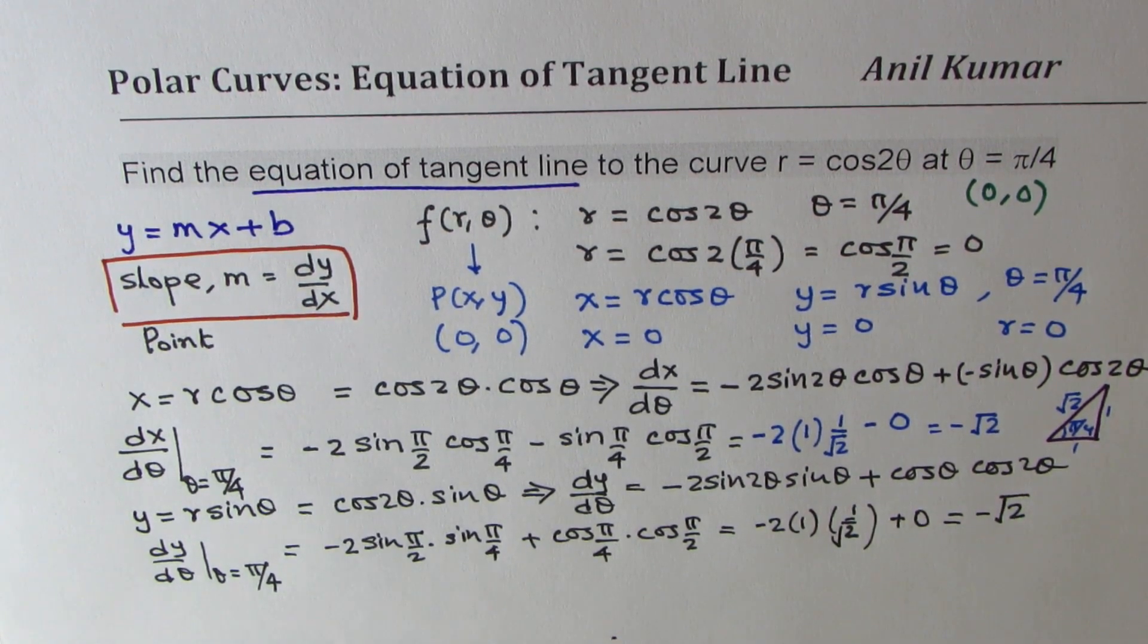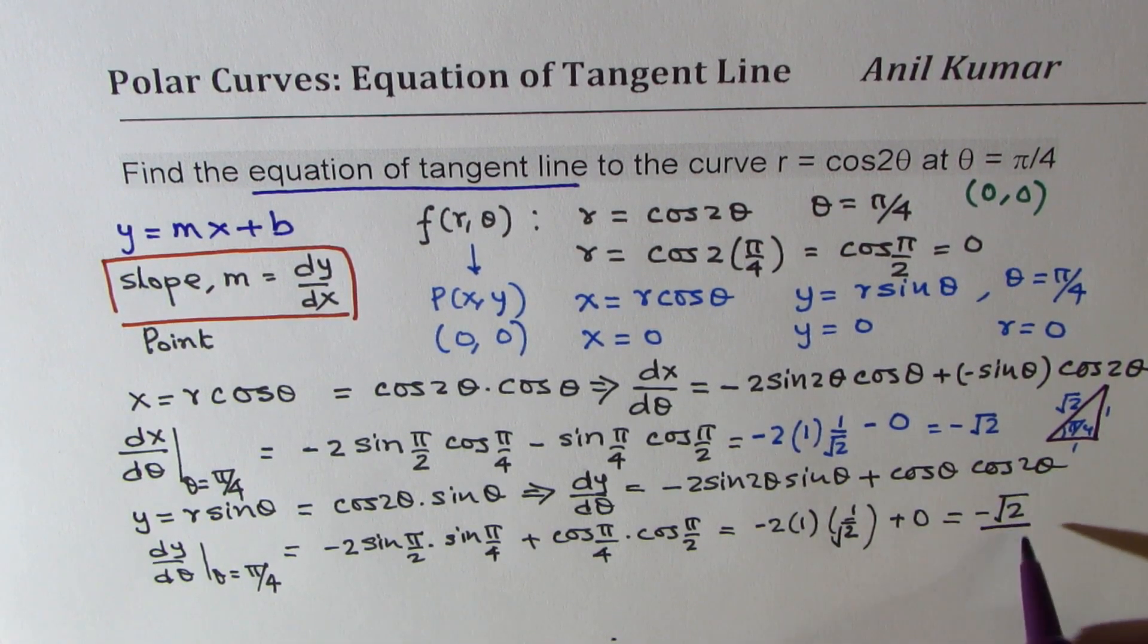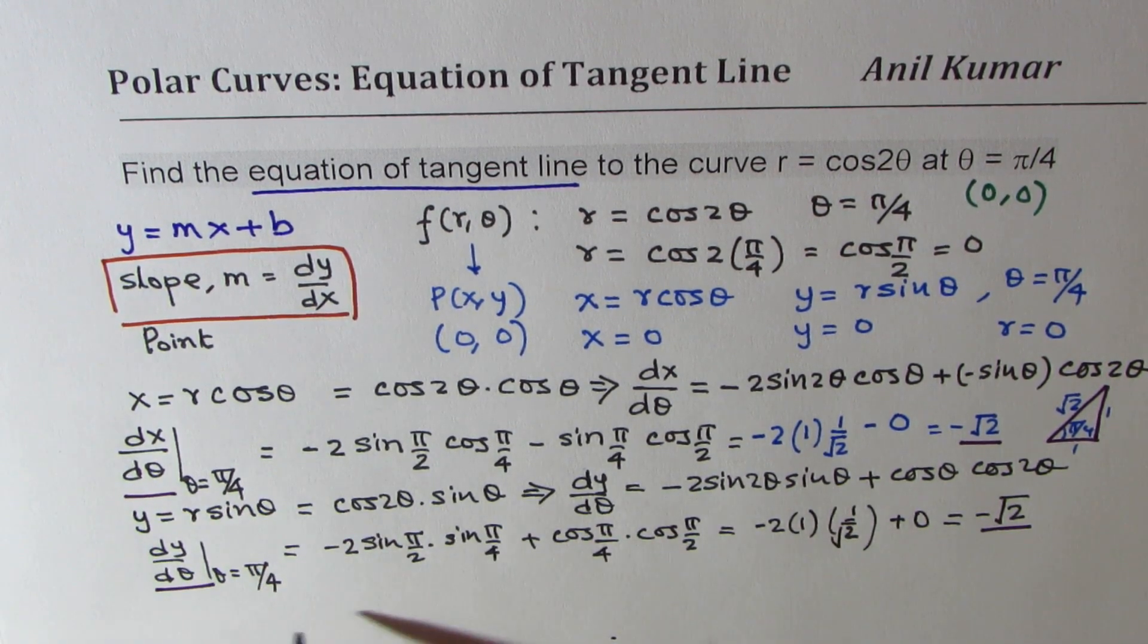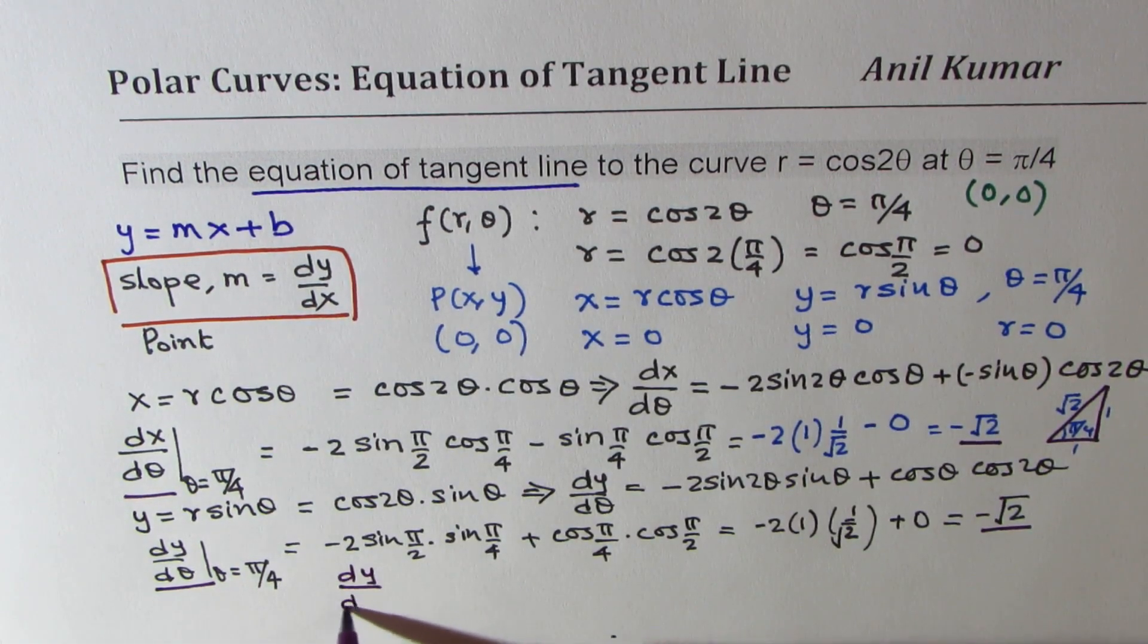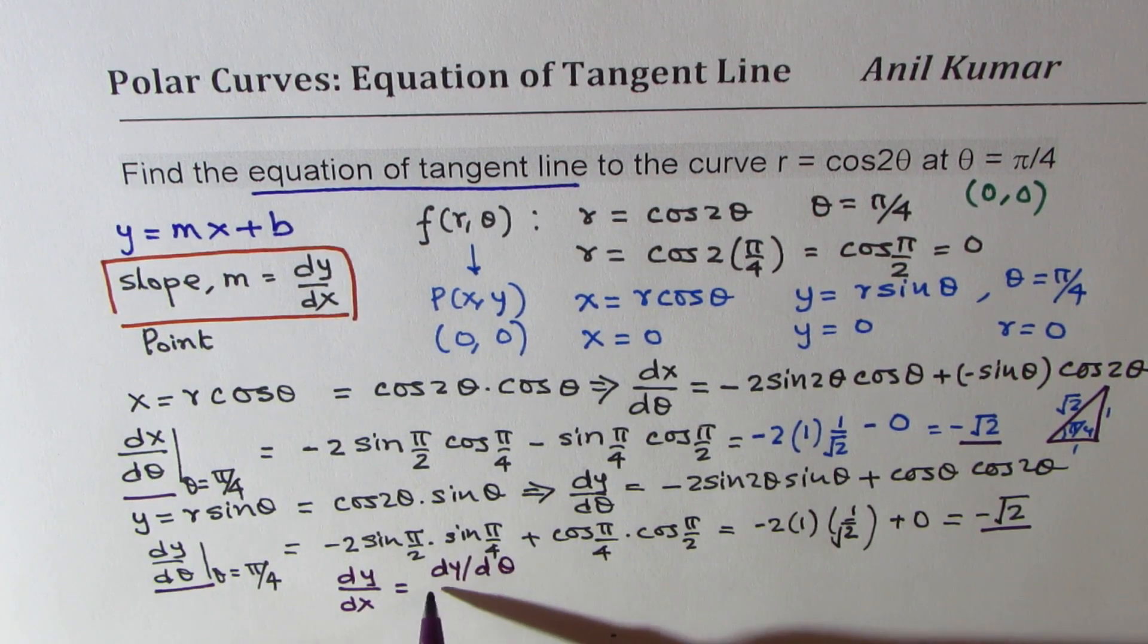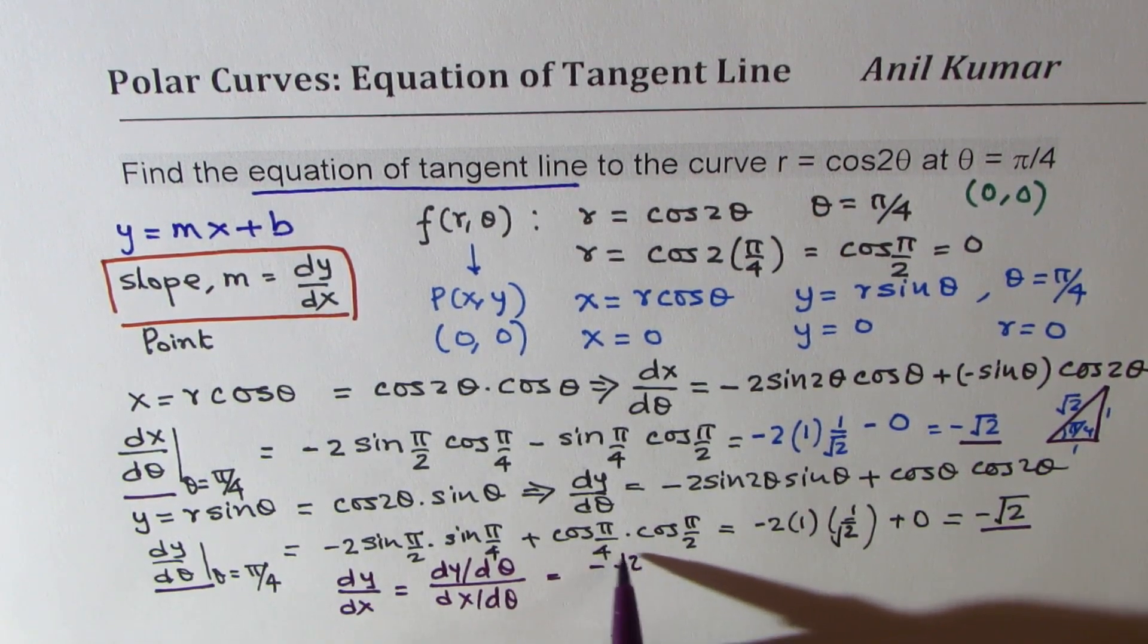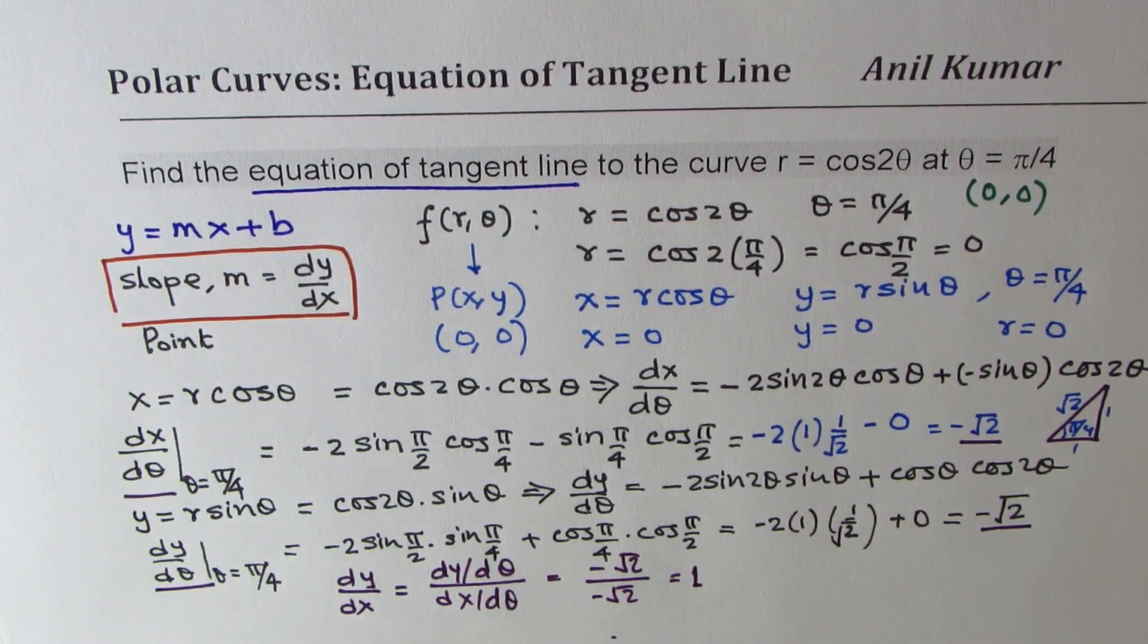So clearly, from these 2 values which we just found for dy d theta and dx d theta, we can write that the slope dy dx will be equal to dy d theta divided by dx d theta, which is minus square root 2 over minus square root 2, or just 1. So the slope is 1.